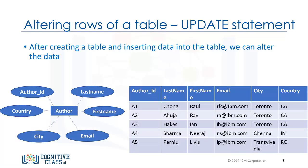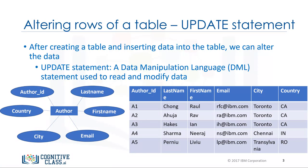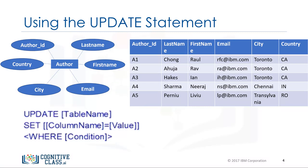After a table is created and populated with data, the data in a table can be altered with the Update Statement. The Update Statement is one of the Data Manipulation Language, or DML, statements. DML statements are used to read and modify data. Based on the Author entity example, we created the table using the entity name Author and the entity attributes as the columns of the table. Rows were added to the Author table to populate it. To alter or modify the data in the Author table, we use the Update statement.